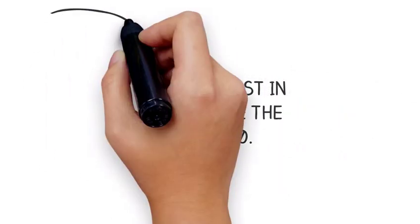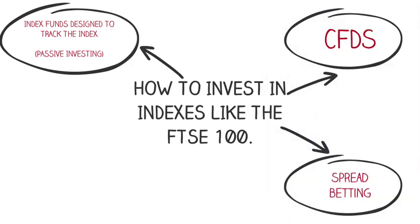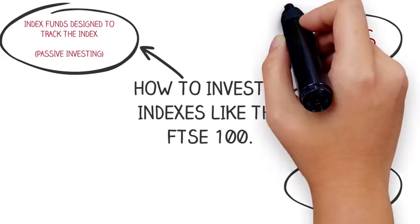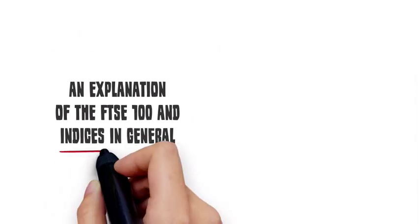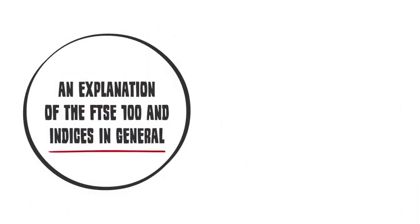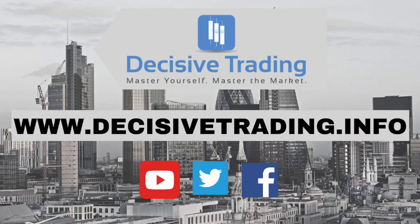How do you invest in indexes like the FTSE 100? You can use index funds designed to track the index, which would be considered passive investing, contract for difference, and spread betting. I focus on contract for difference and spread betting, which allows me to day trade the FTSE 100. That was an explanation of the FTSE 100 and indices in general. I hope that was helpful. I'm James Orr — thank you.